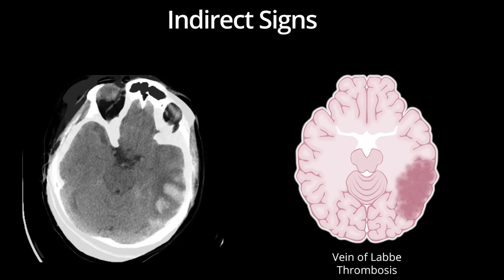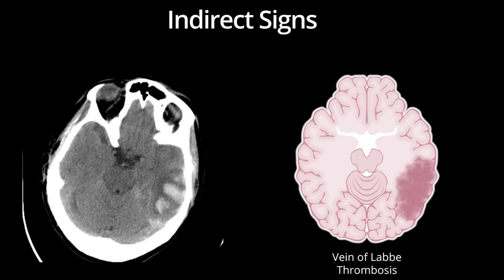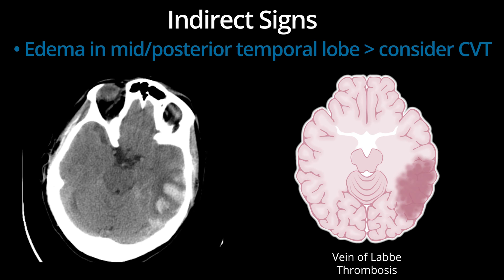Here's another case of characteristic edema and hemorrhage in the left temporal lobe in a patient with dural sinus thrombosis. When you see edema in the posterior temporal region, think about CVT.